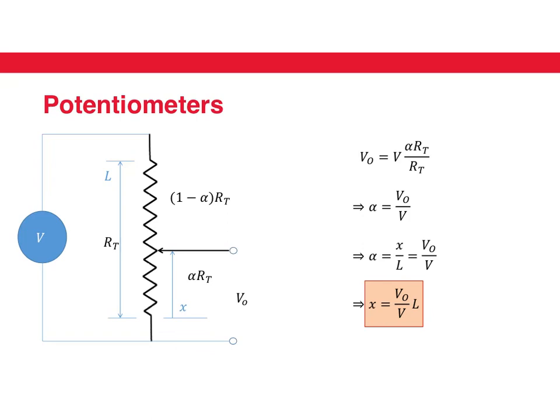Now, how does that work in terms of a potentiometer? In a potentiometer, as we have already seen, one of the resistors is (1 minus alpha) RT, where RT is the total resistance of the potentiometer, and the other resistance is alpha into RT. Of course, this alpha is a function of x, which is the distance of the wiper from one end of the potentiometer.